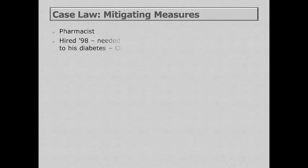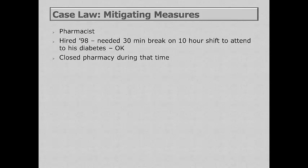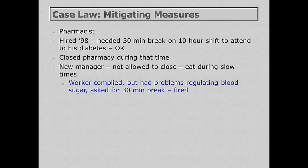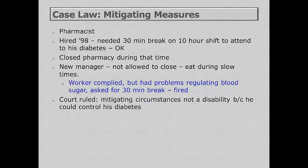Consider a pharmacist case under the ADA for mitigating measures. He was hired and needed a 30-minute break on a 10-hour shift to attend to his diabetes — the original manager agreed and simply closed the pharmacy during that time. When a new manager took over, he didn't allow that break, saying the worker could eat during slow times. Although the worker complied, he had problems regulating his blood sugar and asked for a 30-minute break. The employer fired him. However, when the courts looked at it, they said he really wasn't disabled because his diabetic medication helped him control his disability, and therefore he wasn't covered under the ADA.